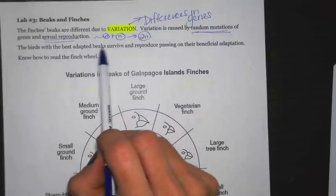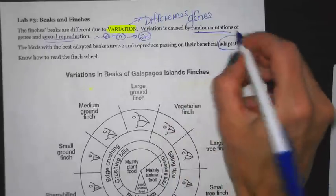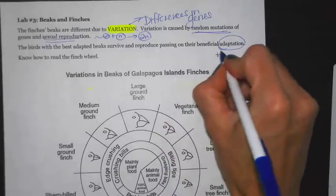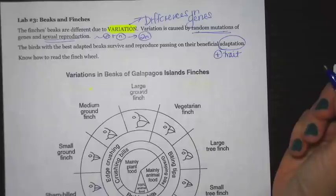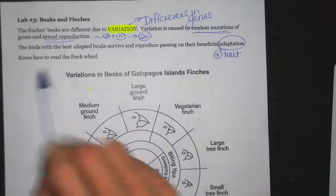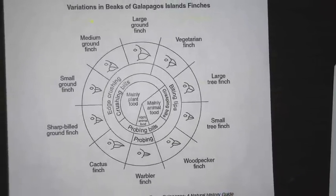The birds with the best adapted beak survive and reproduce, passing on their beneficial adaptation. Remember, an adaptation is a positive trait. You need to know how to read the finch wheel — some years it's not on the exam, but other years there are about five questions related to it.